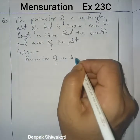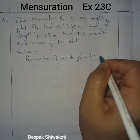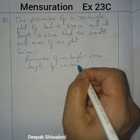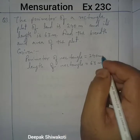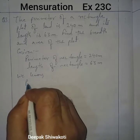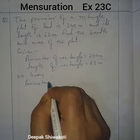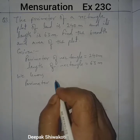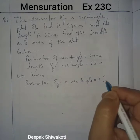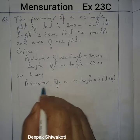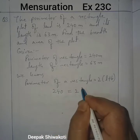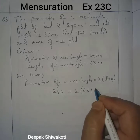Given: perimeter of rectangle equals 240 meter and length of rectangle equals 63 meter. We know the formula of perimeter — with the perimeter formula we will find the breadth. Perimeter equals 2 into length plus breadth, so 240 equals 2 into 63 plus breadth.